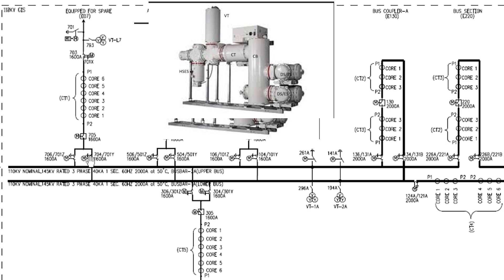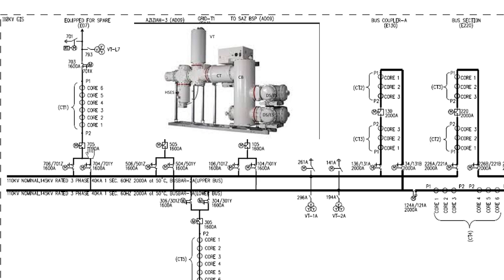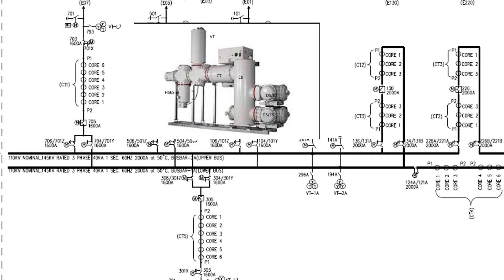Then there are disconnectors Q1 and Q2. Before closing the breaker, you must decide which bus bar you want to connect the bay to, and accordingly close that disconnector. If you close Q1, it will energize bus bar 1; if you close Q2, it will energize bus bar 2. Both cannot be closed together under normal conditions, but under maintenance or special conditions it is possible. Once prerequisites for the circuit breaker are met according to the interlocking scheme, you can close the circuit breaker.